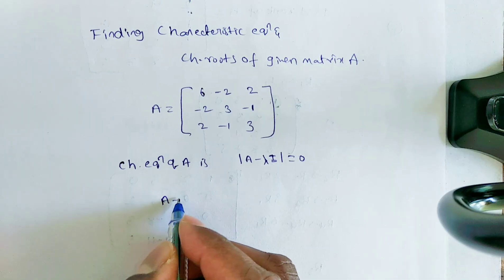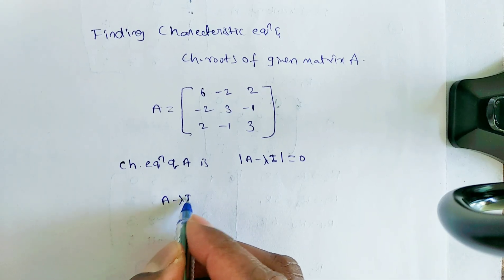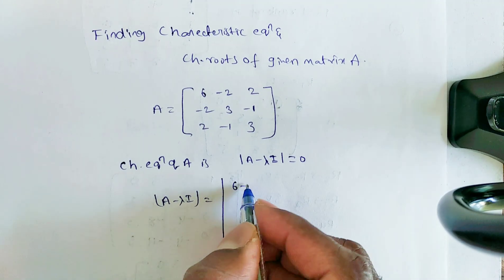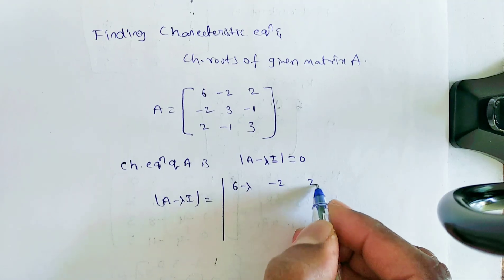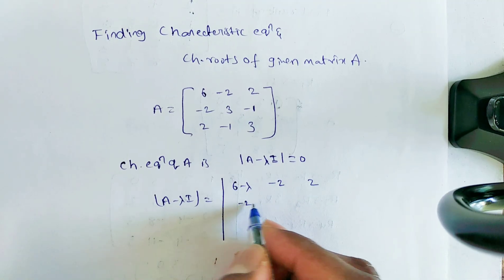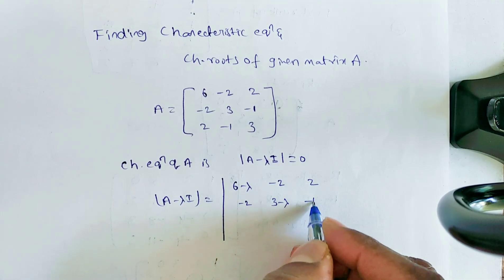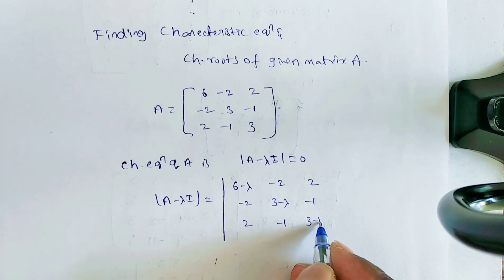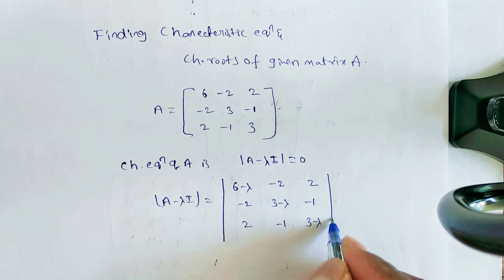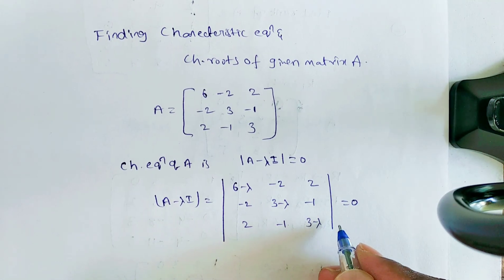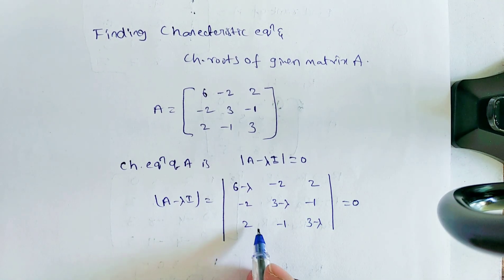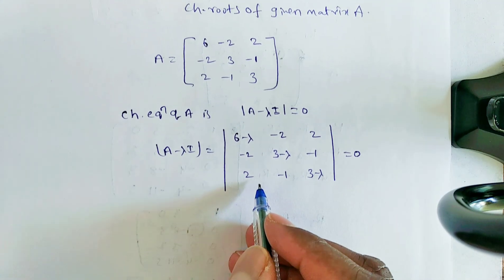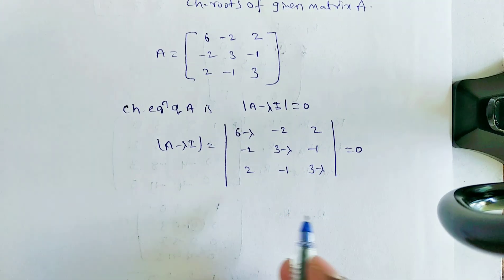In this case, we let det(A - λI) equal to: |6-λ, -2, 2 / -2, 3-λ, -1 / 2, -1, 3-λ| = 0. Here, while finding the determinant, many students will make mistakes.